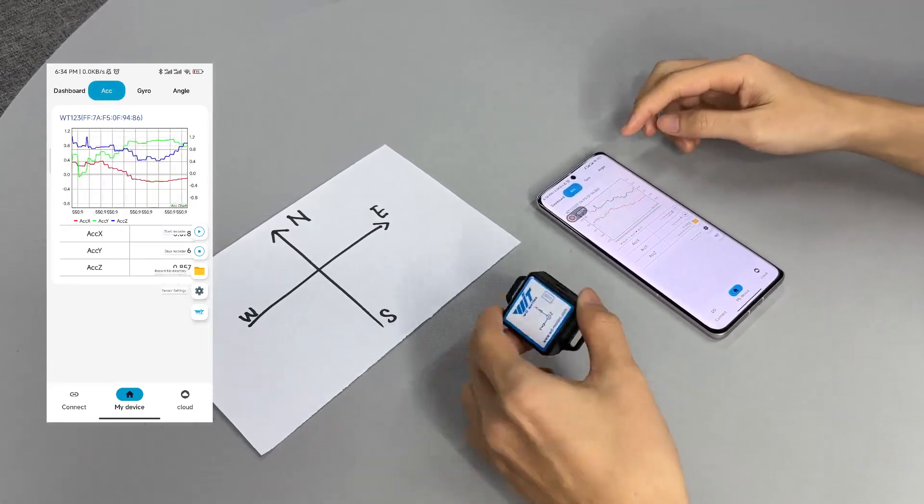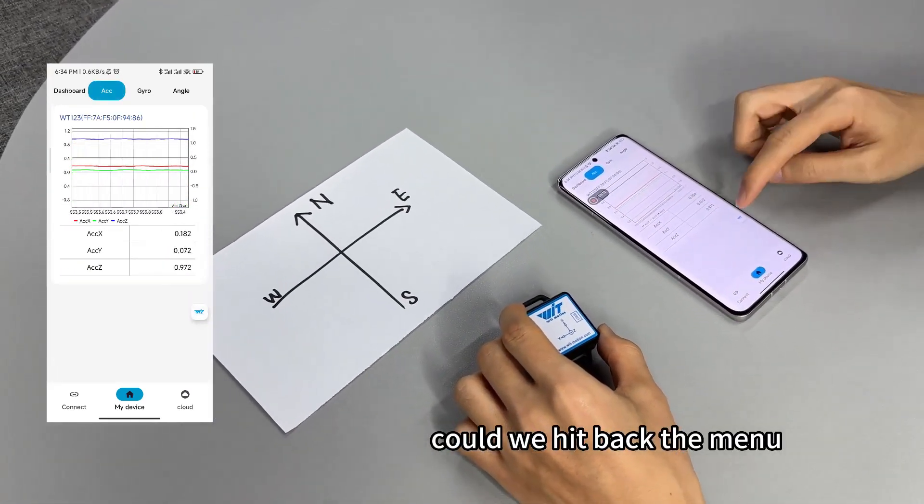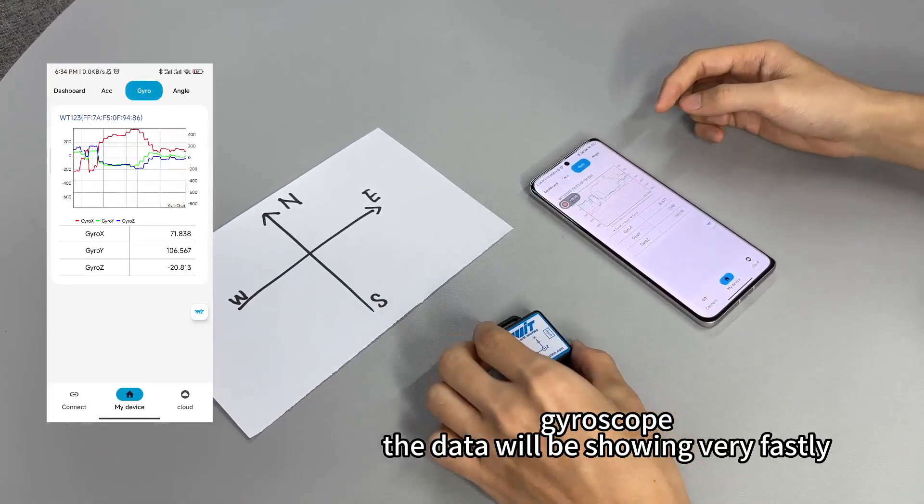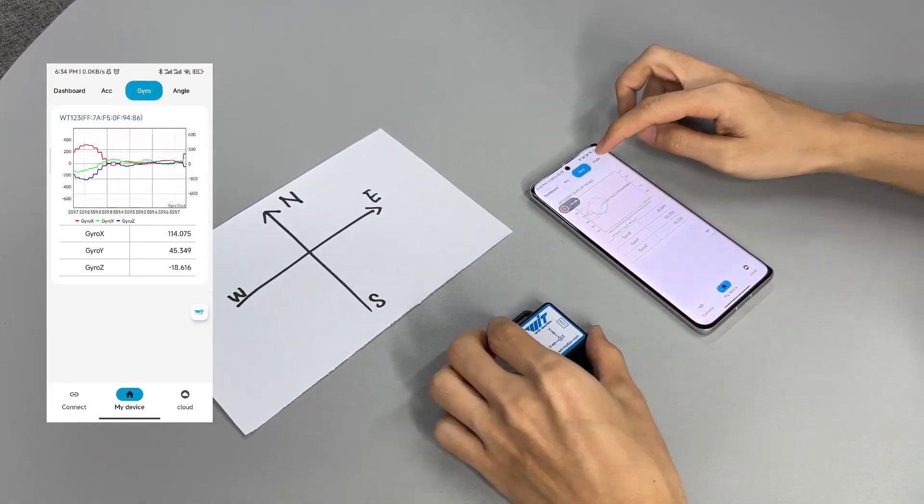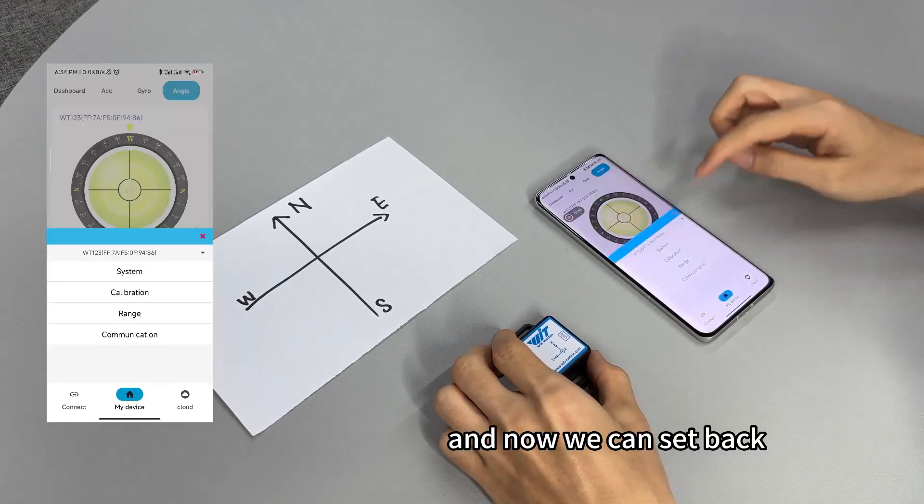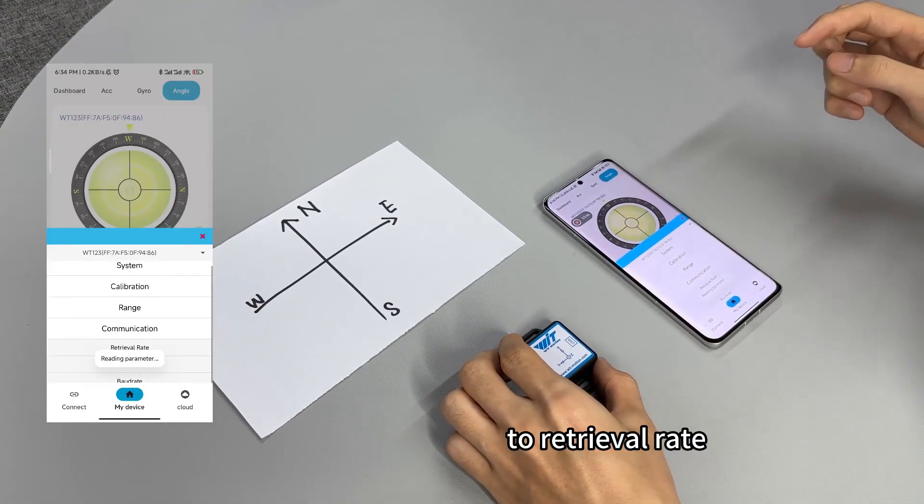Acceleration, we hit at the menu, gyroscope. The data will be showing very fastly. Angle. And now we can set that to the output rate.